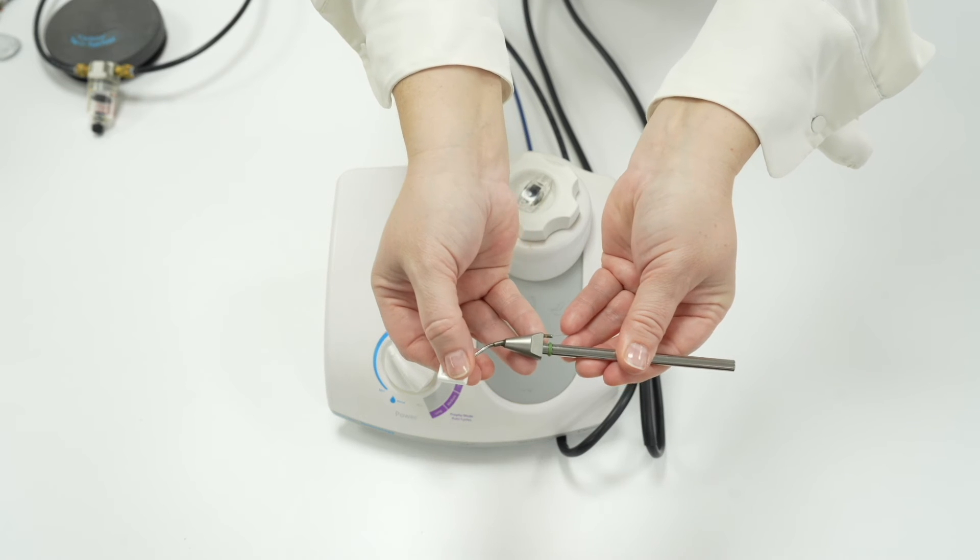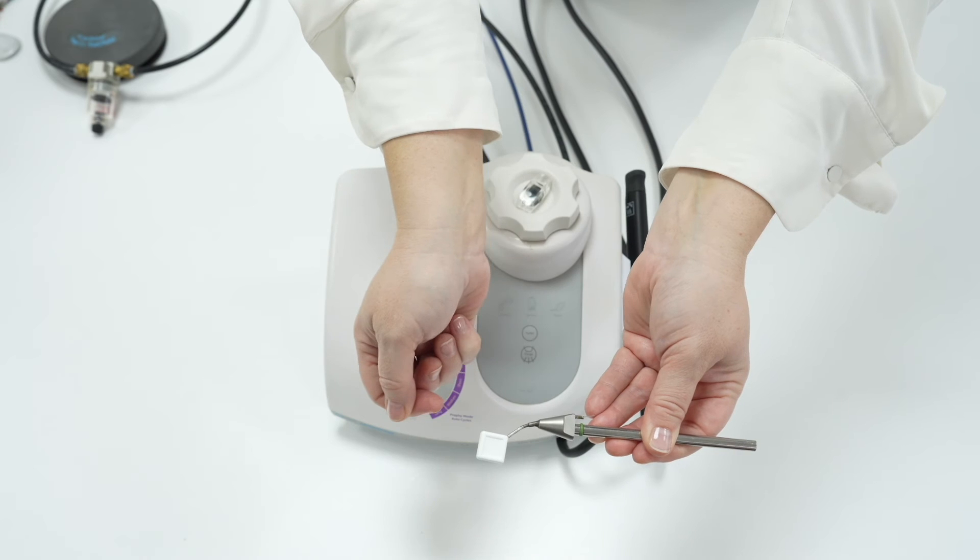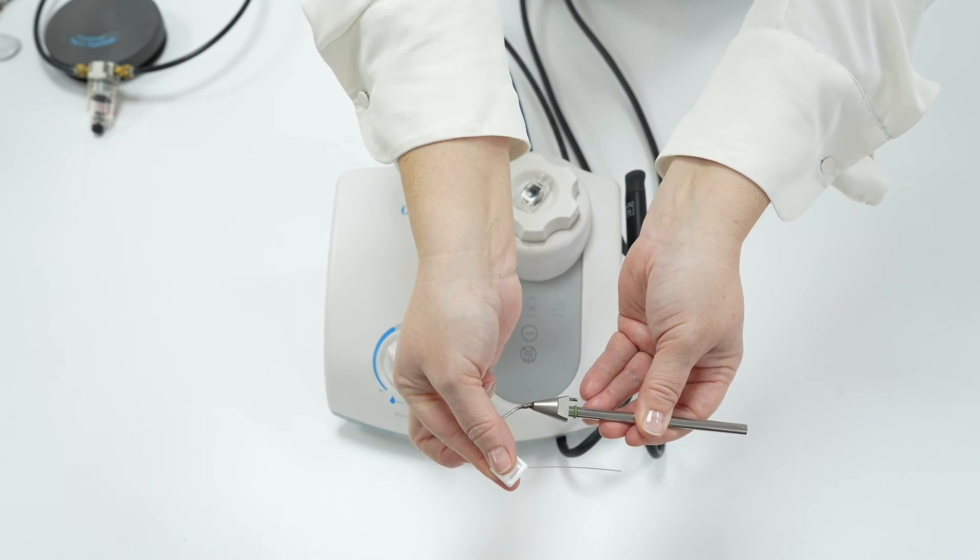The profi insert should always have the cleaning rod inserted, keeping it unblocked. This should be inserted after use and whilst autoclaved and not removed until the insert is ready to be used again.